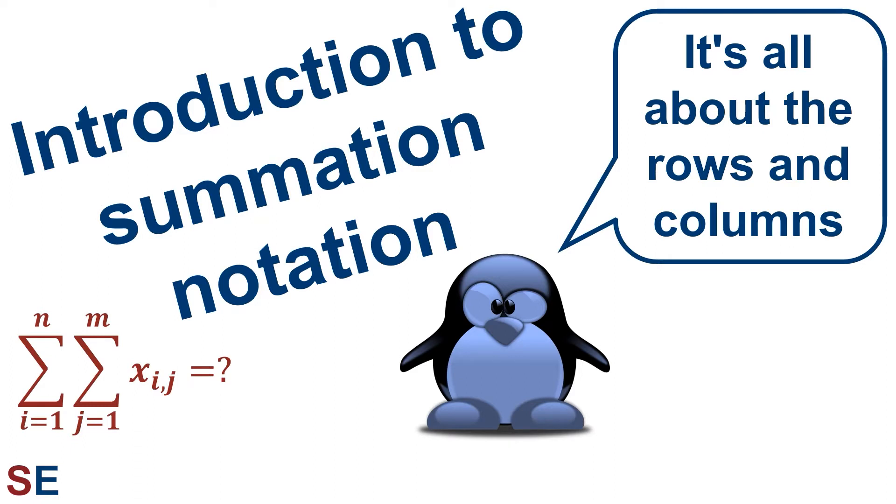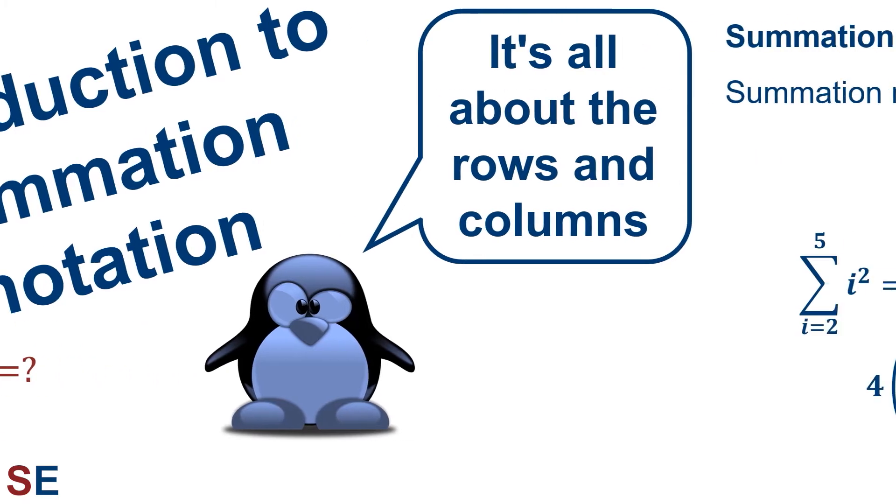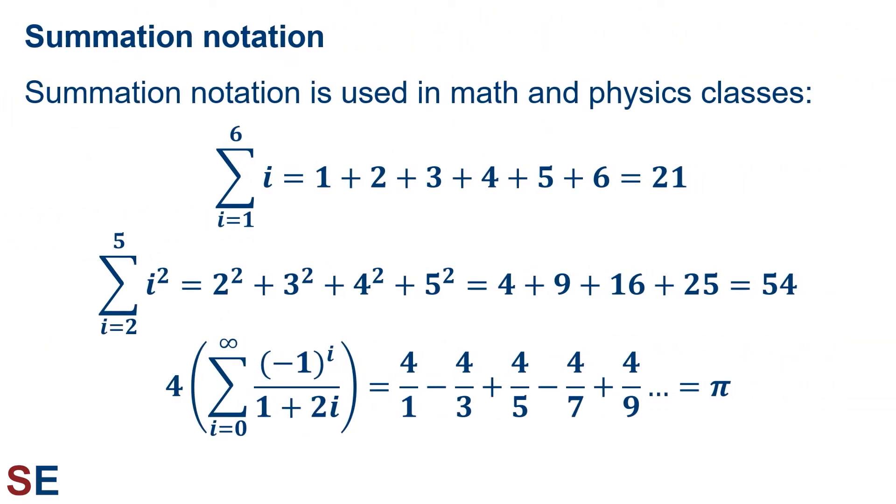So it really is all about the rows and the columns. Summation notation is used in math and physics classes, as shown here. The symbol sigma, which looks like a large E, means you're going to sum or add up the terms to the right of the symbol. The text above and below the symbol indicates values for the first term and for the last term. The index letter indicated, in this case the letter i, is understood to increase by 1 for each term.